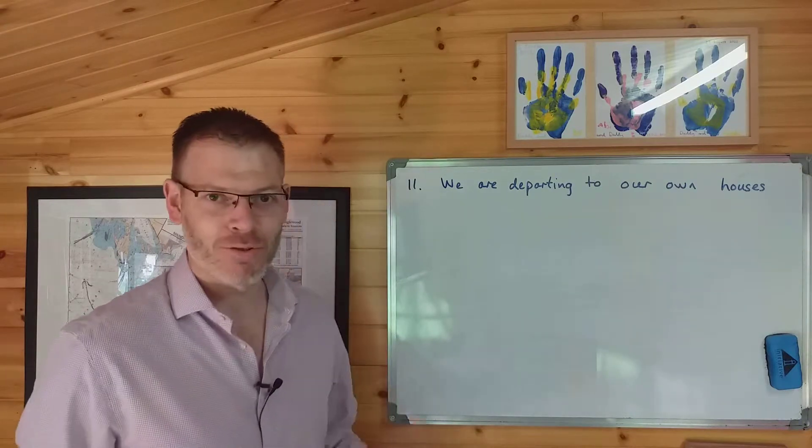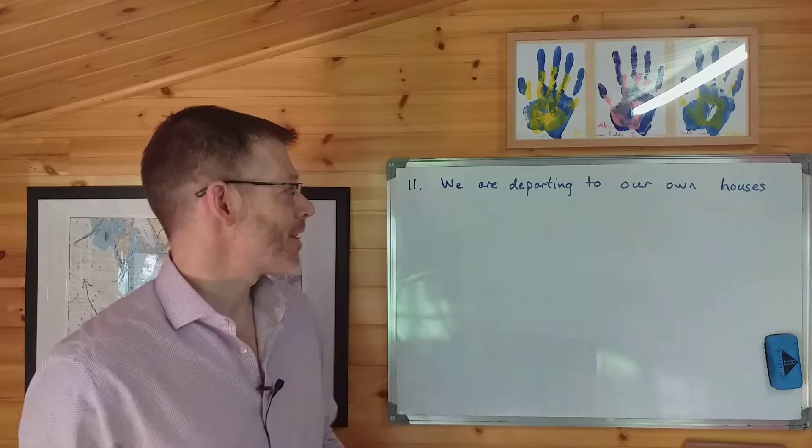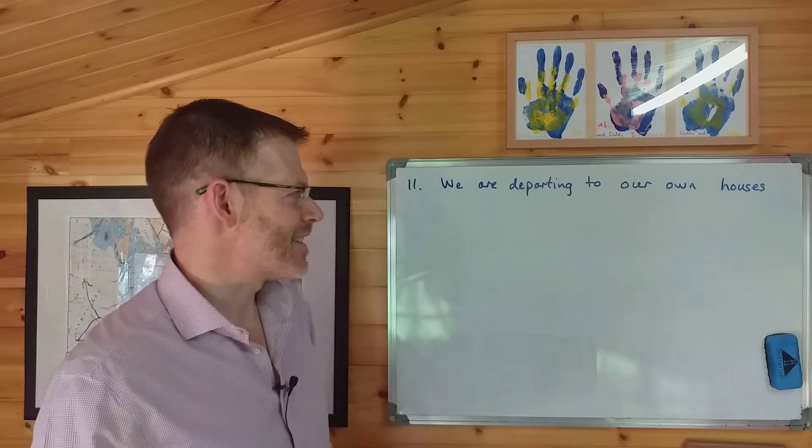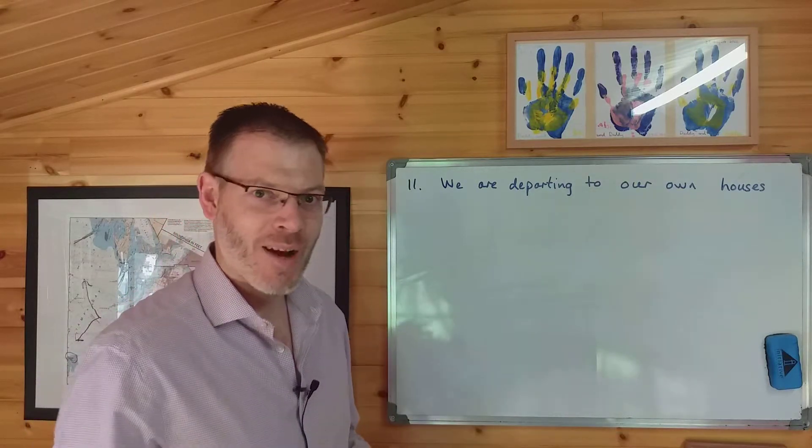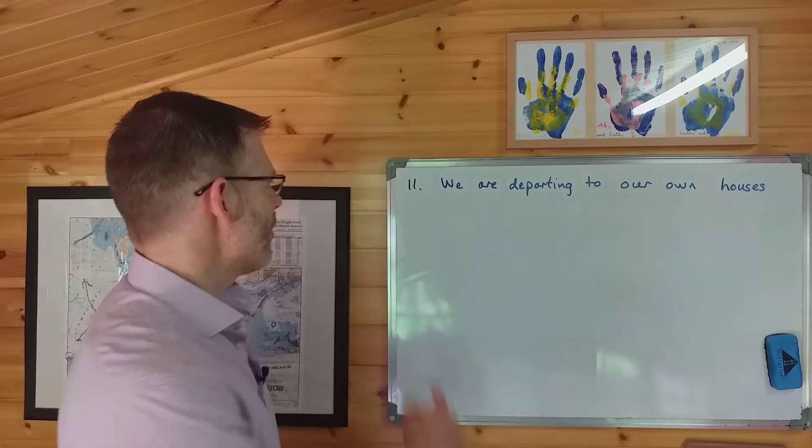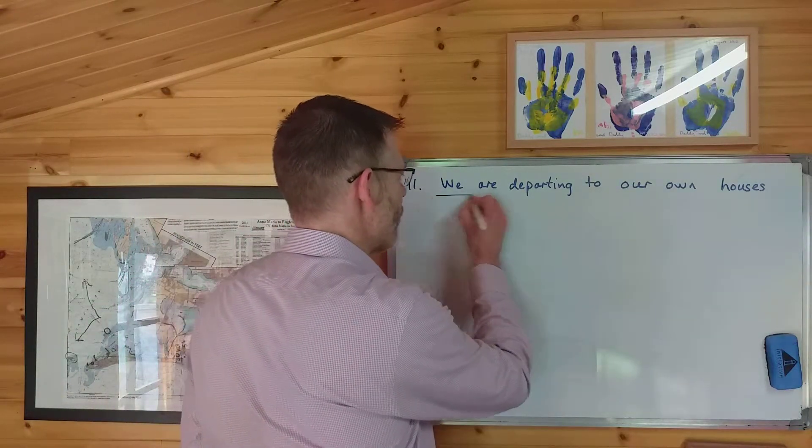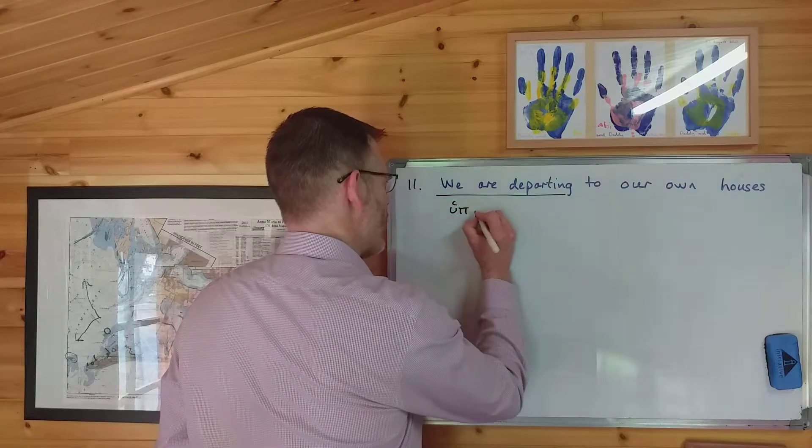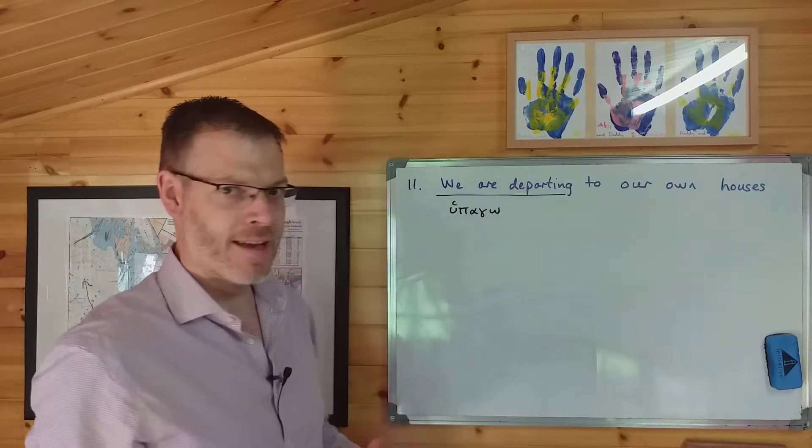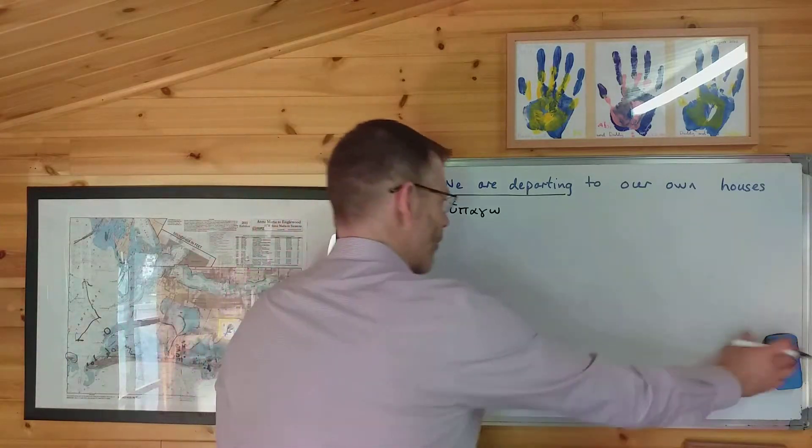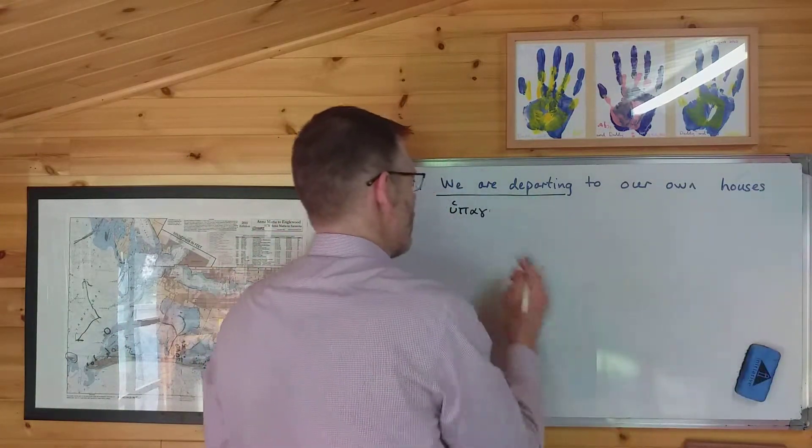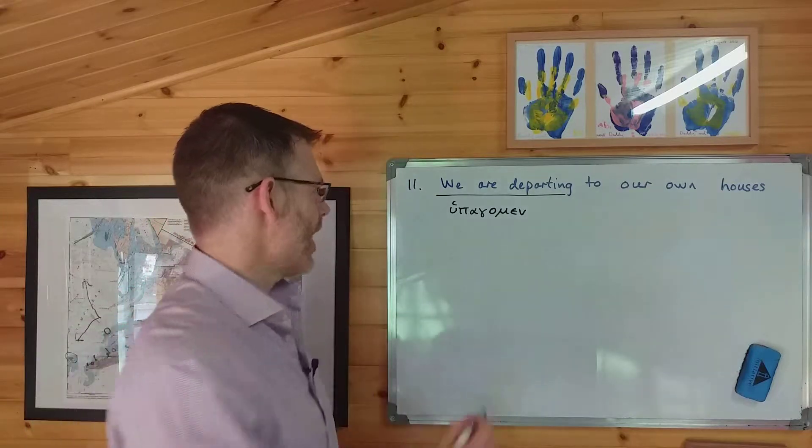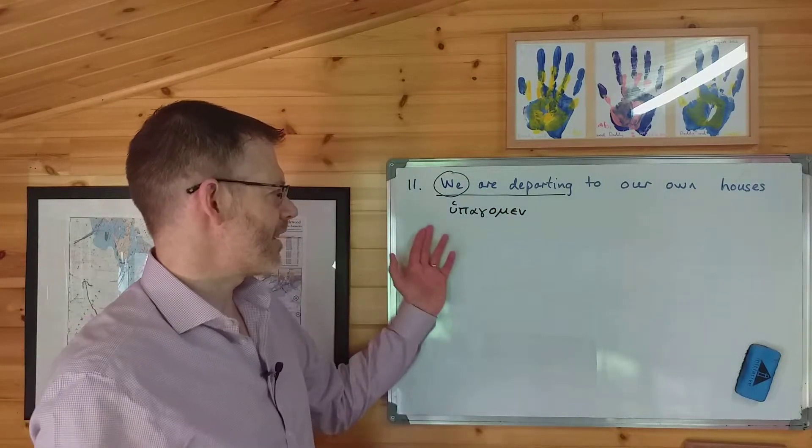Okay, and now here's the third example. Just clean the whiteboard off to give us a bit more space. Number 11, we are departing to our own houses. Just a couple of complexities here, which is worth drawing to your attention, and we'll spot them as we work our way through. But first, let's just find the verb. Here's the verb, we are departing. And we are departing comes from the verb I depart, which is hupago. Nice little mnemonic for that one. I am departing, up and go, hupago. But we want, we are departing. So hupago, hupageis, hupagei, hupagomen. That means we are departing. So that's the verb. The subject, well, there's no extra subject because the subject is simply we and it's included within the verb.